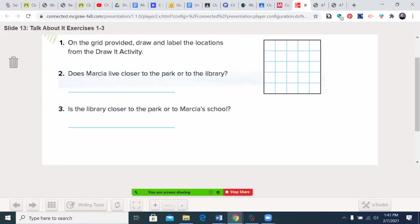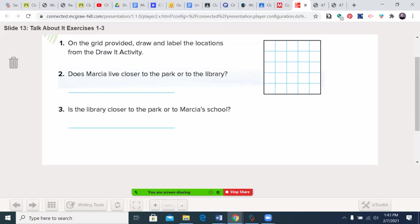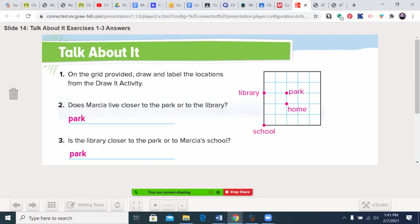On the grid provided, draw and label the locations from the activity. I'm glad you're with me. Here's the school, the library, the park, and home. Does Marcia live closer to the park or to the library? Well, the library is one, two, three away. The park is one. Is the library closer to the park or to the school? We're one, two, whereas the school is one, two, and three. So the park is the answer to both. Go ahead and write that in.